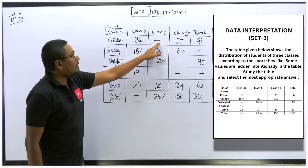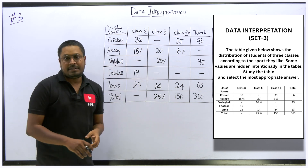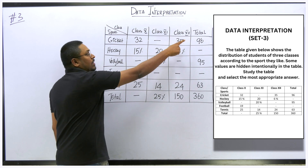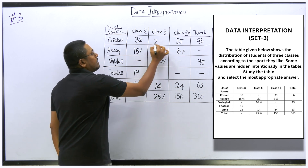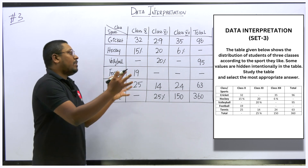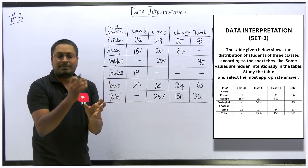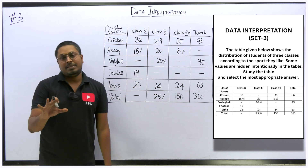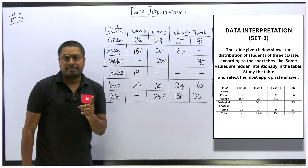For example, the class 11 students playing cricket — that missing value is easy to find because we know both the row total and the column total. When you subtract 32 and 35 from 96, the result is 29, so that missing number is 29. Always first check what values are missing, then identify which value is easiest to find. Find that value first, then target the other missing numbers — you can surely get all missing values in the table.